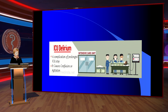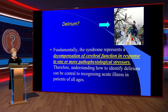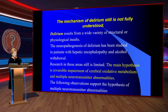ICU delirium is a complication of the ICU stay and can cause confusion or agitation. This syndrome represents the compensation of cerebral function in response to one or more pathophysiological stressors. Understanding how to identify delirium is central to recognizing acute illness in patients of all ages. The mechanism of delirium is still not fully understood; the main hypothesis is reversible impairment of cerebral oxidative metabolism and multiple neurotransmitter abnormalities.